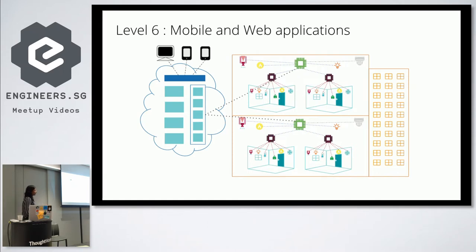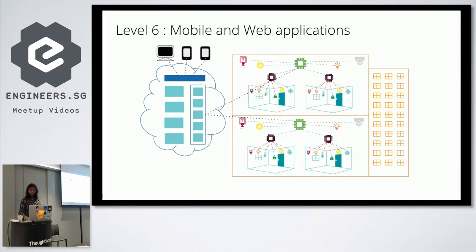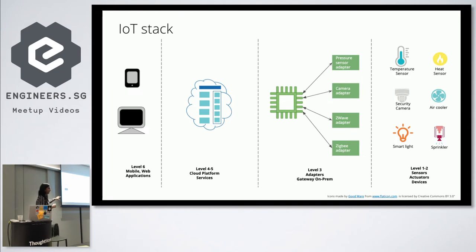The last part is mobile and web applications. The cloud service provides a platform on which you can plug in multiple channels — not just mobile or web apps. You can have voice-activated devices: for example, say 'Alexa, I'm home' and the security system knows it doesn't have to guard your house anymore. Because applications integrate with the cloud via an API, you can just add on channels. So putting all of this in perspective, this is the IoT stack: six levels starting with sensors, actuators, devices, adapters, on-prem gateways, the cloud platform services, and the mobile applications.